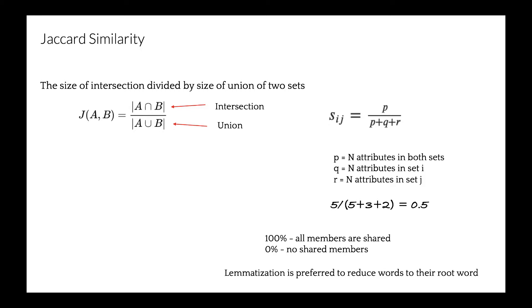So if they share all members, that would be 100% similar. And if they share no members, they are 0% similar.